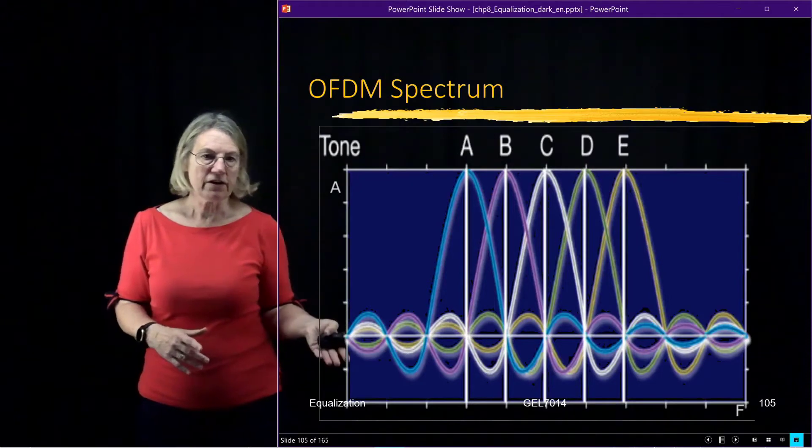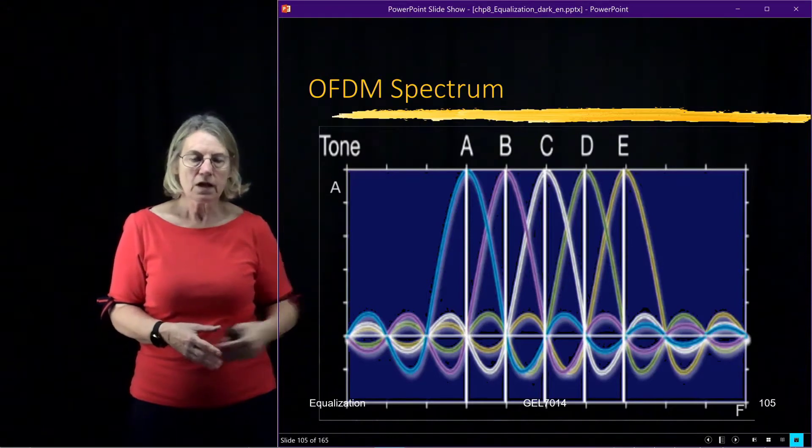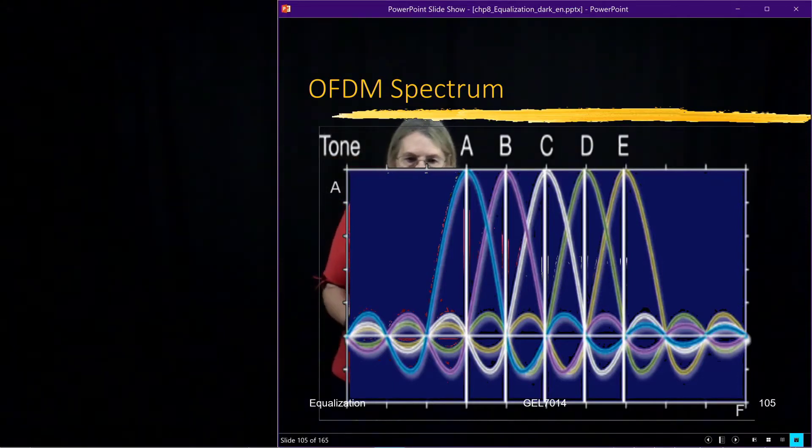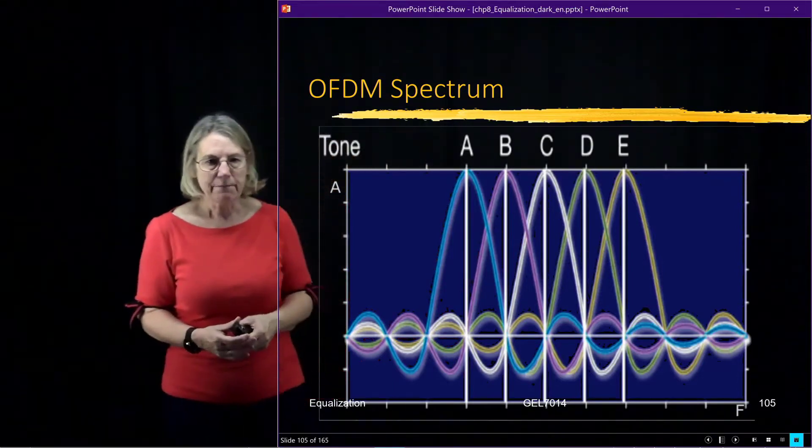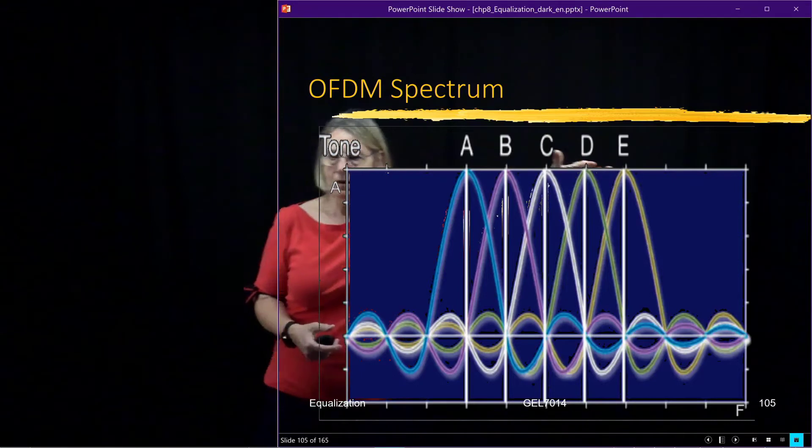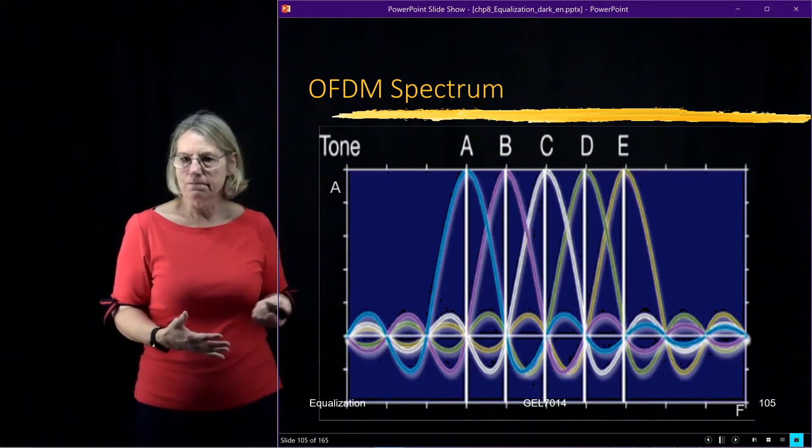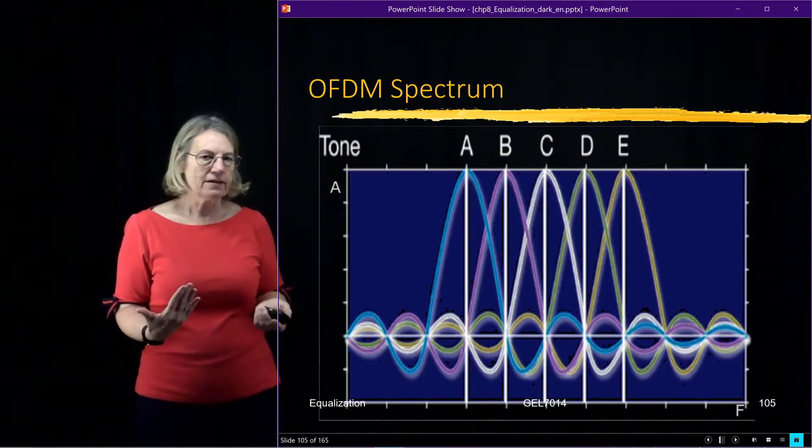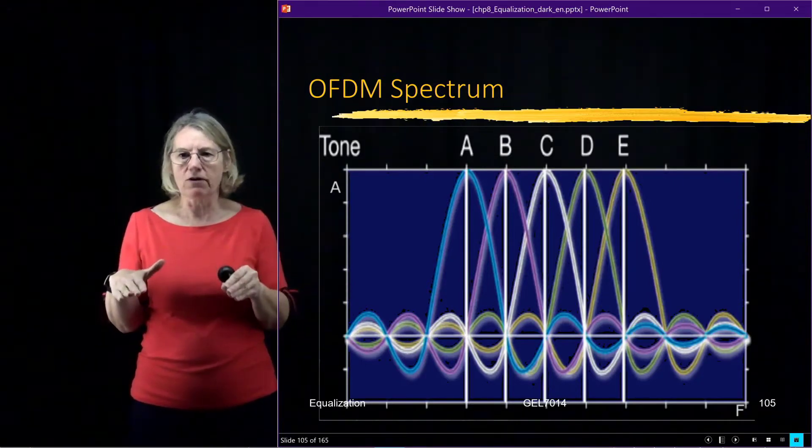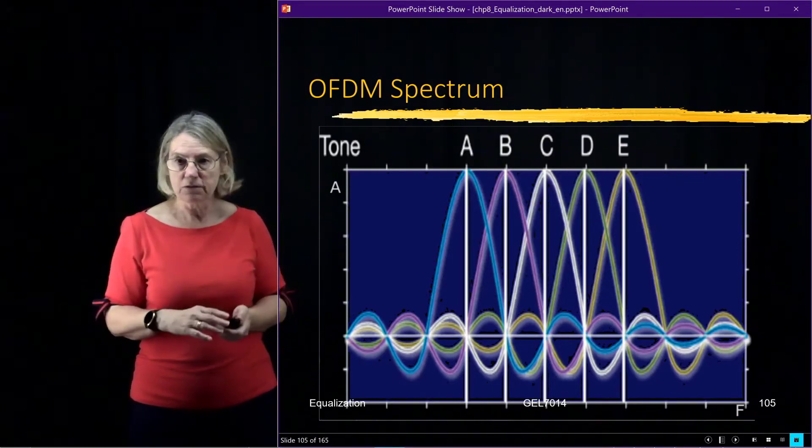This would be a typical spectrum for OFDM. It looks like sinusoids closely spaced, one to the other. If I look at this, I might not see dips between A and B, between B and C. It would look pretty flat because they're so closely knit. This is the typical spectrum. Sometimes the spectral characterization of OFDM makes it attractive. Today I'm going to talk about how it's robust against inter-symbol interference, but there are other reasons OFDM could be adopted.